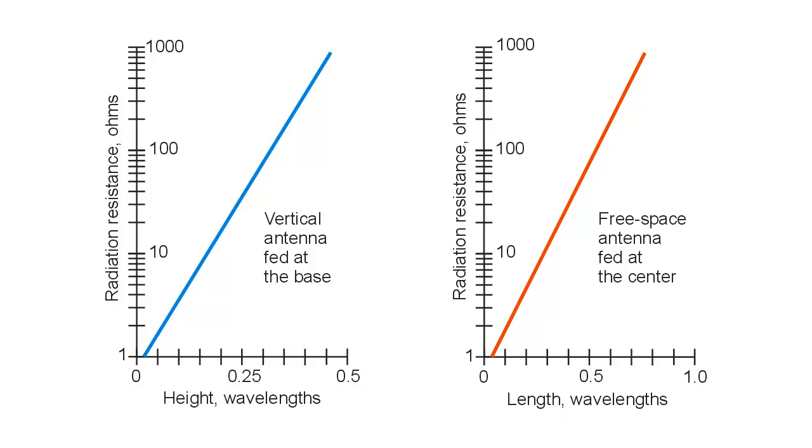Here's a graph, and it actually is shown in Teach Yourself Electricity and Electronics, 5th edition, as figure 27-1, on page 506. Here's our free space antenna, fed at the center, this graph over here on the right. The length in wavelengths, zero, one half, and up to one wavelength. At a half a wavelength, as we saw, it's about 73 ohms. That's the radiation resistance. If we make the antenna shorter, that resistance declines, and in fact,